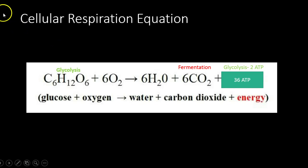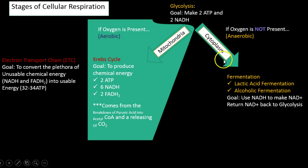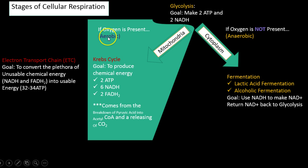Last tutorial we talked about all the reactions that happen in the cytoplasm where oxygen is not needed, so there are anaerobic conditions — that was glycolysis and fermentation. This tutorial we're going to talk about the reactions that occur in the mitochondria, and if it happens in the mitochondria it's going to be aerobic because it's going to need oxygen.